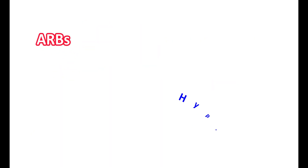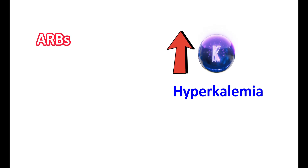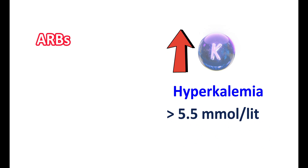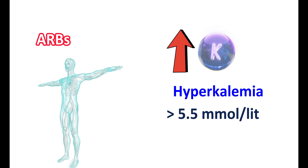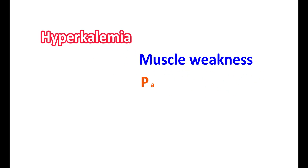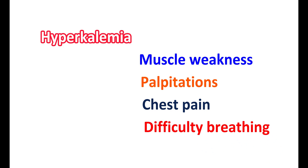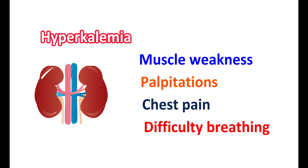ARBs can produce hyperkalemia, which is elevated levels of potassium in the body — specifically, potassium levels above 5.5 millimoles per liter. Potassium is an important electrolyte that plays a key role in controlling the functions of neurons, muscles, and the heart. Elevated potassium levels may produce symptoms like muscle weakness, palpitations, chest pain, and difficulty breathing. ARBs can interfere with kidney function and reduce the excretion of potassium, leading to more retention and hyperkalemia. This is more pronounced in people with impaired kidney function or pre-existing diabetes.